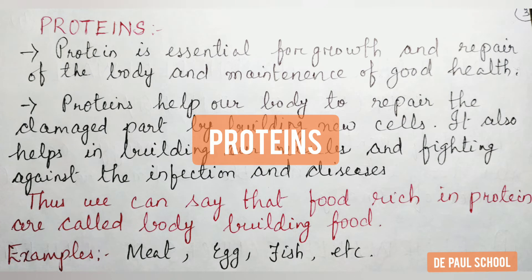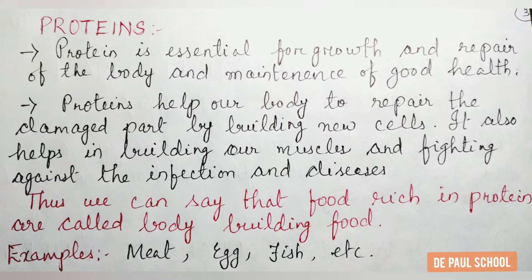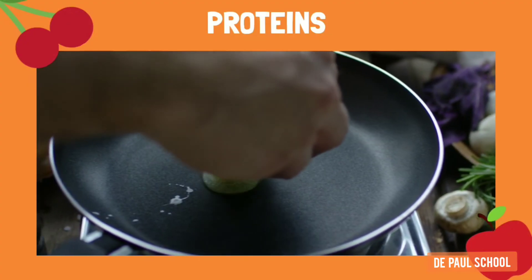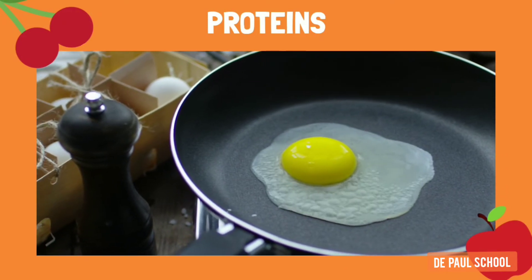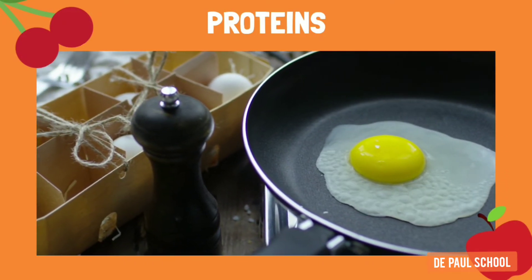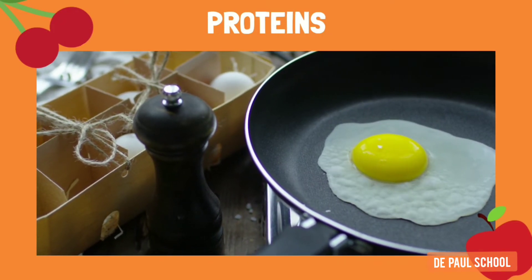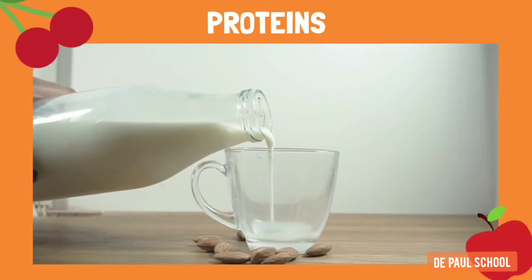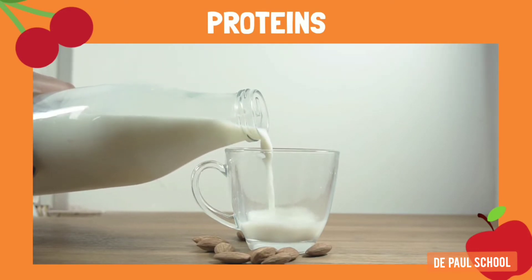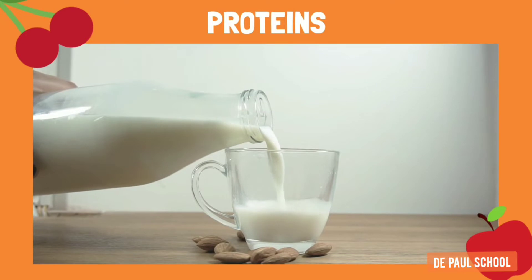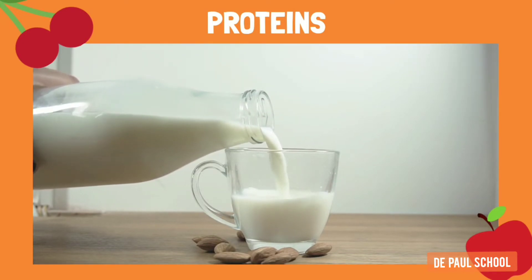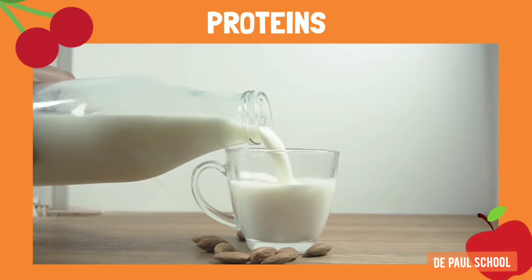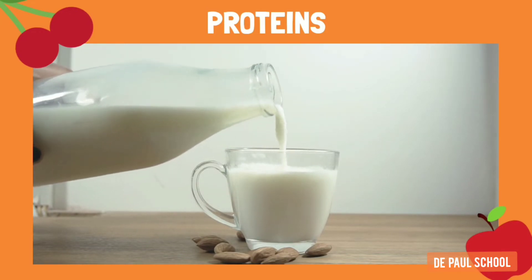The next component of food is proteins. Protein is essential for growth and repair of the body and maintenance of good health. Proteins help our body to repair damaged parts by building new cells. It also helps in building our muscles and fighting against infection and diseases. Since protein helps us in growing, small children need more proteinaceous food. Foods rich in protein are also called body-building food. Few examples of food items that have proteins are meat, egg, fish, etc.